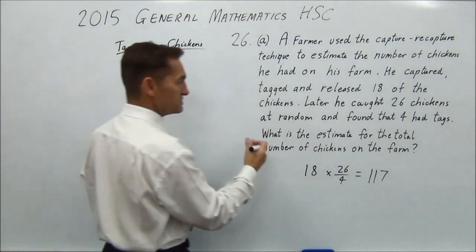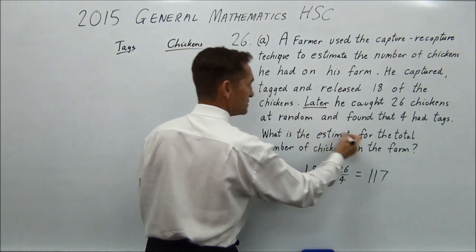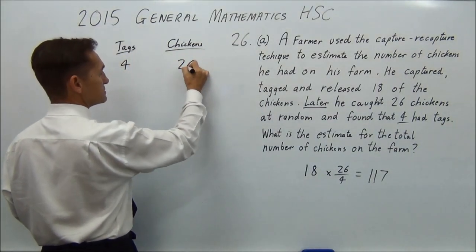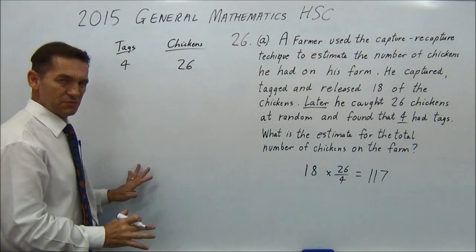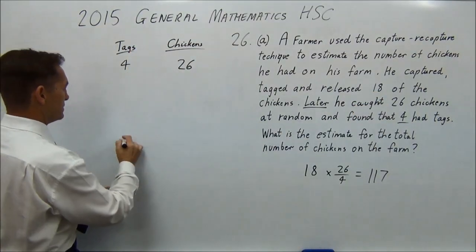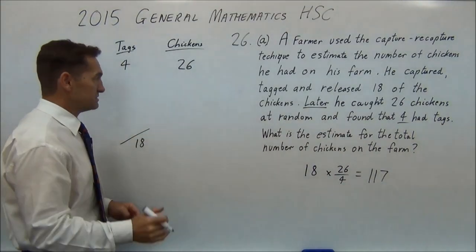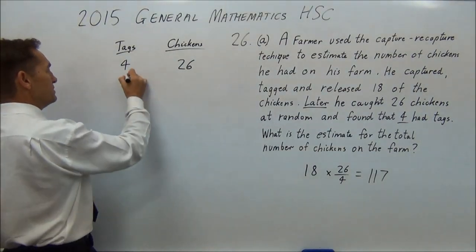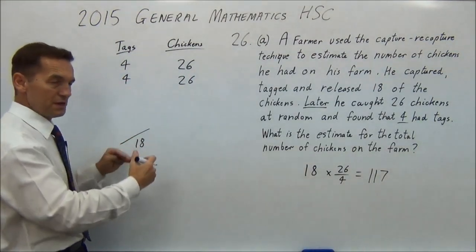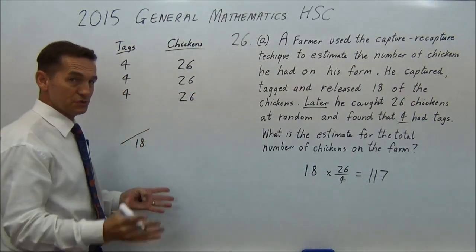So how many tags do we get each time? Well we get four tags every time we do the later catch. So we're looking for the later catch, four tags. So on the later catch I catch four tags and I get 26 chickens. How many tags do I want all together? I want 18 because I've already tagged my 18 tags. So I want this column to add up to 18. As soon as I've got my 18, whatever this column adds up to, that's my answer. So if we do another catch, we're going to catch four more tags with 26 chickens. Four plus four is eight. So keep adding them. So I'll add another four. I'll add another 26 chickens. Four plus four plus four is 12. Not there yet.